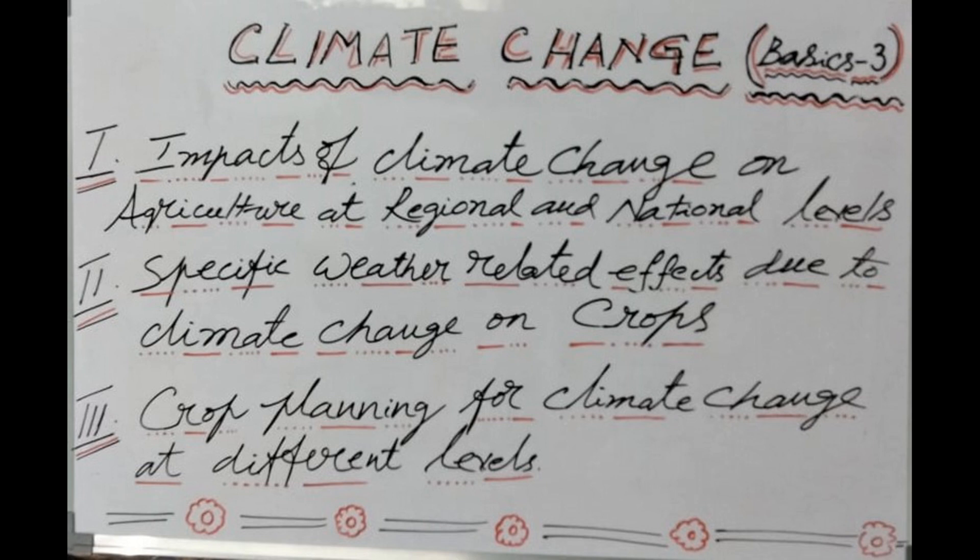Now let us go to the third subtopic: crop planning for climate change at various levels. Having understood the impacts of climate change on agriculture and specific weather-related effects, we should not be worried if we have a crop plan. This plan operates at four levels: number one, global level; number two, national and regional level; number three, local level; and number four, farm level.